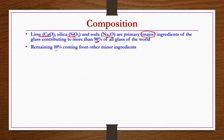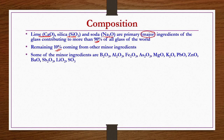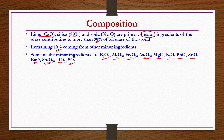The remaining 10 percent comes from other minor ingredients such as boric oxide, alumina, ferric oxide, arsenic trioxide, magnesium oxide, potassium oxide, lead oxide, zinc oxide, barium oxide, antimony oxide, lithium oxide, and sulfur trioxide. You can see that all of them are oxides and all of them are inorganic — confirming the chemical definition that glass is a union of different types of inorganic oxides.